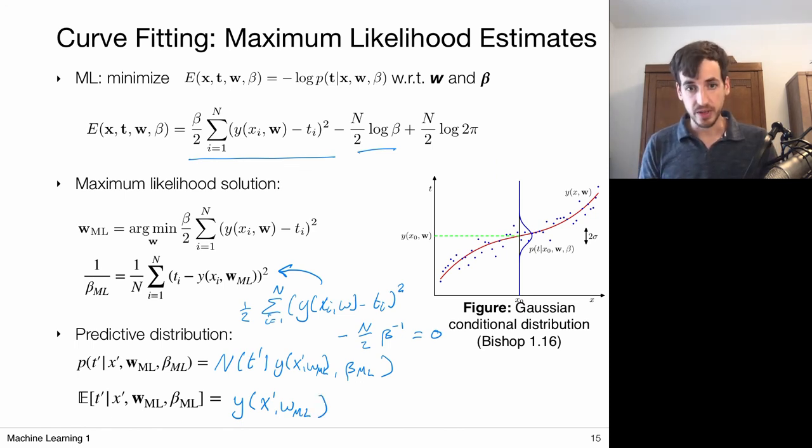So for this point prediction, I only need the maximum likelihood solution for w and the maximum likelihood solution to w was simply given by this least squares optimization problem.